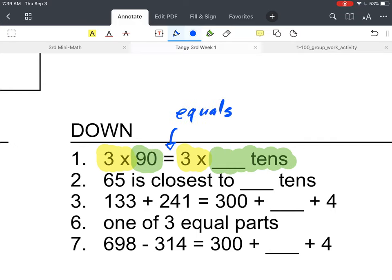But really, we want to get kids used to saying that sign isn't just an equals. We're not just looking for the answer on the other side. What that really means is the same as. So one side is the same as the other. In this case, we'd say three groups of 90. Again, that multiplication sign, we like to clarify as groups of 90 is the same as three groups of blank tens. And then we can know that 90 is the same as nine tens.